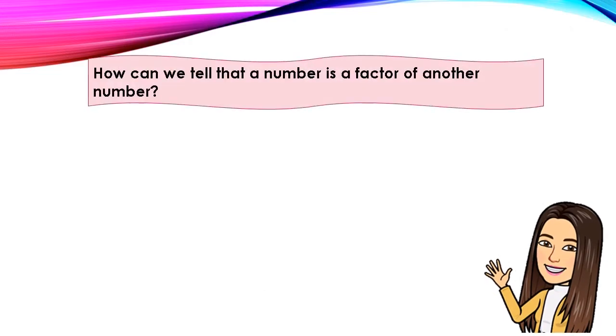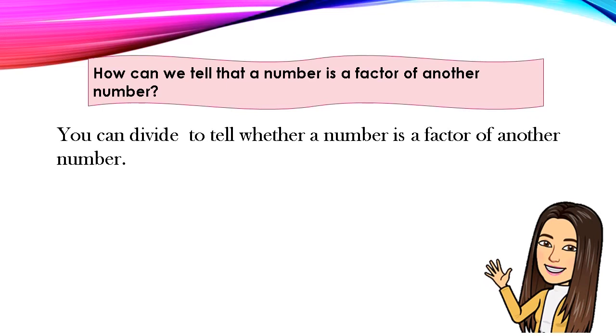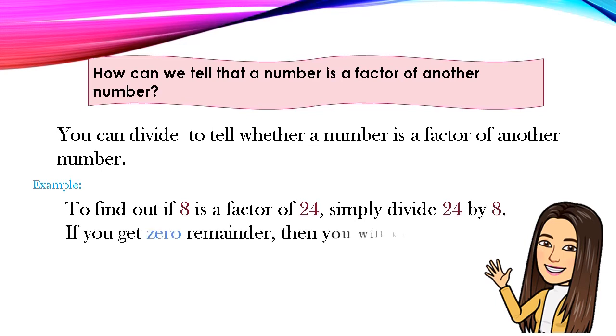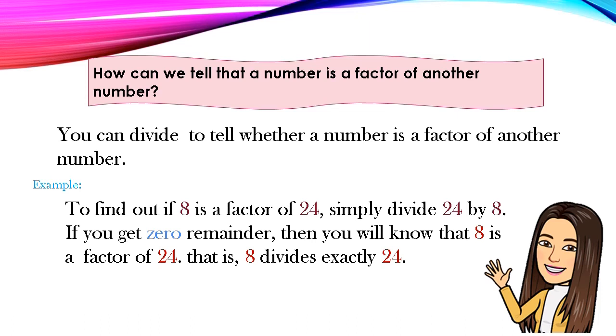How can we tell that a number is a factor of another number? You can divide to tell whether a number is a factor of another number. Example: to find out if 8 is a factor of 24, simply divide 24 by 8. If you get 0 remainder, then you will know that 8 is a factor of 24. That is, 8 divides exactly 24. Since 24 divided by 8 is 3, remainder 0, 8 is a factor of 24.